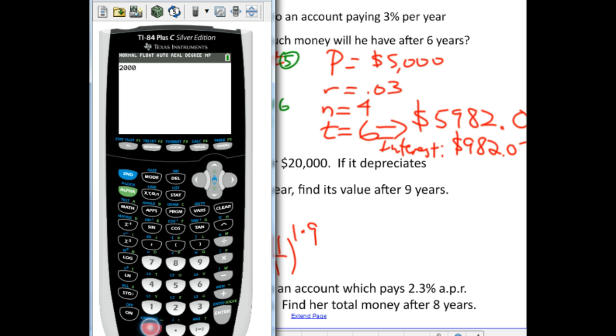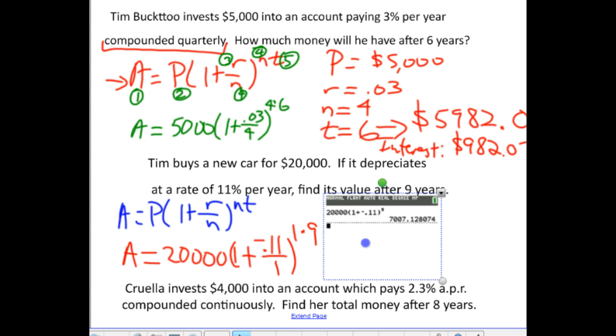We're typing this equation into my calculator. I'm going to get 20,000, parentheses, one plus negative .11, close parentheses. And, again, I don't need to divide by one. That doesn't change anything. Raised to the power of nine years. Now, again, let it make sense. This car should better not be worth more money than what it started with. If you get a number bigger than 20,000, you know you're doing something wrong. And, typically, it's because you're leaving out the negative sign on the r value. So, we hit enter, and now look. So, the value of this car after nine years would be worth $7,007.13.